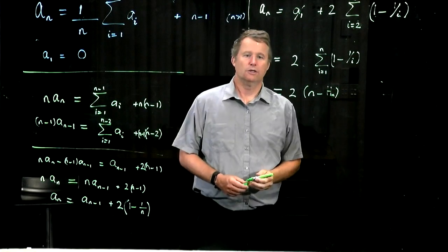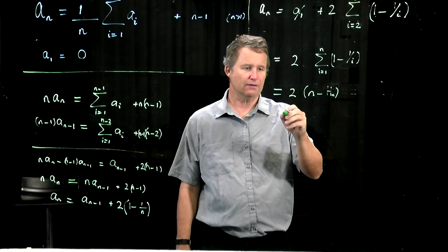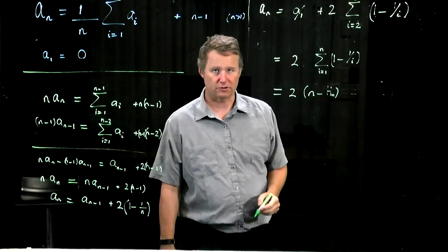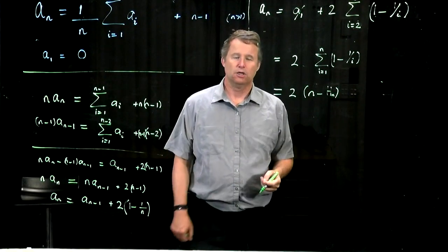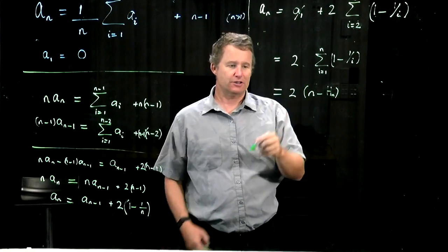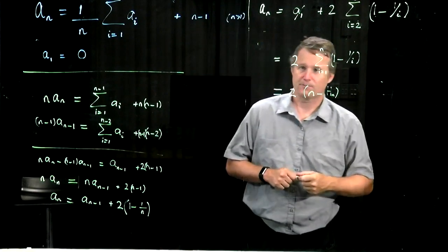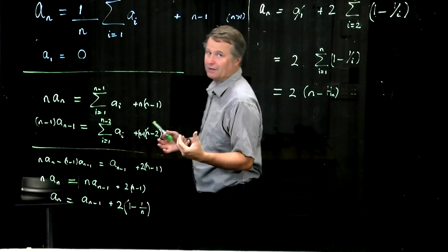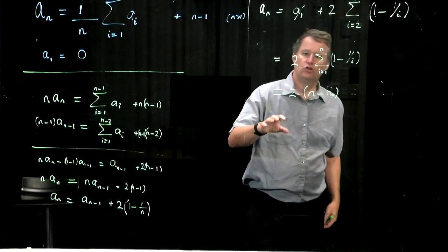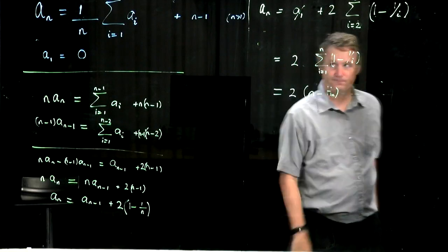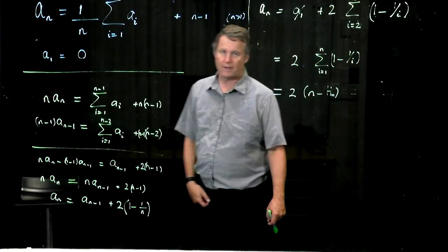So it looks like 2n plus lower order terms, because h_n, remember, is of order log n. So the average number of comparisons done by quickselect on a randomly chosen input permutation is 2n minus a little bit. Asymptotically it looks like 2n.